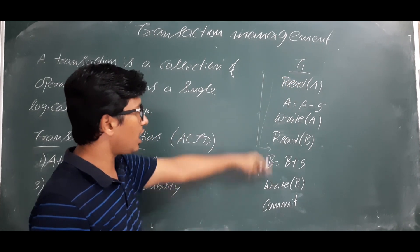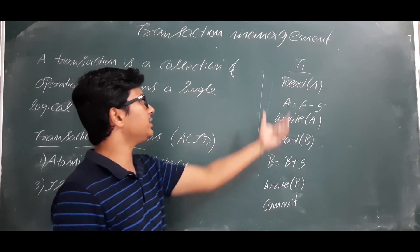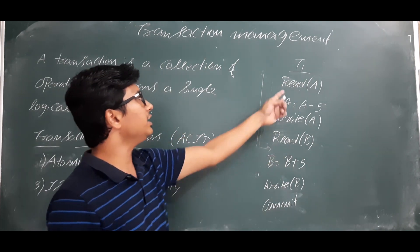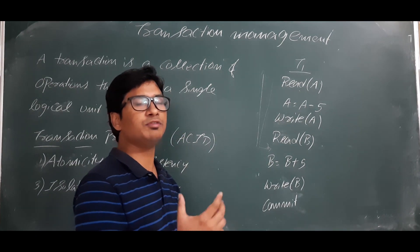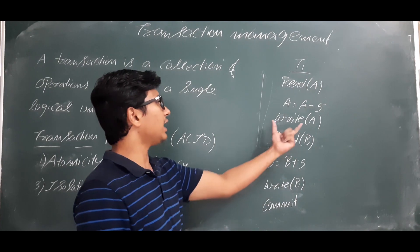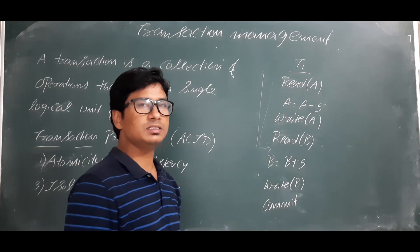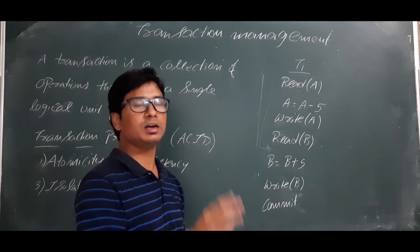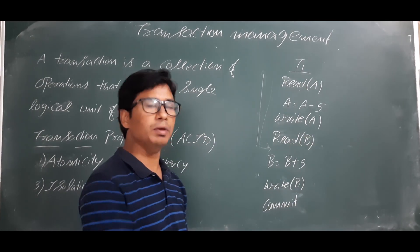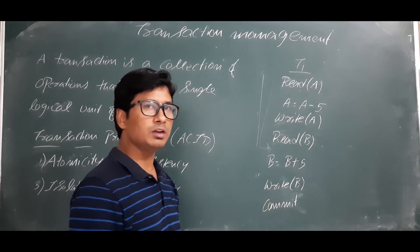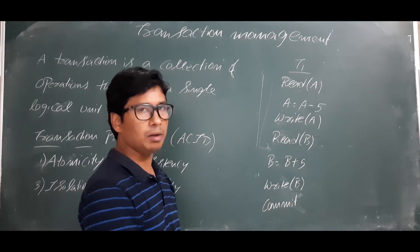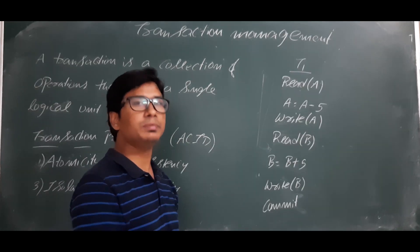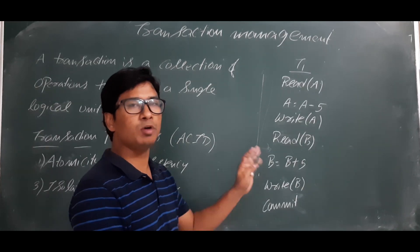Here we have seven operations. Read A means we are reading the content from data item A. Write A means we are temporarily saving the modifications in memory. Commit operation means you are permanently saving the modifications, or we will have an abort operation.